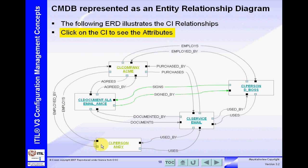We should know how to get from one record to another and then back to the related record. If we look at these relationships, you start seeing what they are. For example, Andy is employed by the Acme Corporation, and in the opposite direction, the Acme Corporation employs Andy. That's a very important relationship. These relationships are critical to the success of the CMDB — without them, this represents merely an inventory database. We want the relationships so we better understand the effect of making changes on our services.